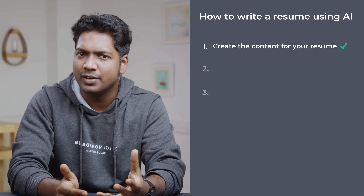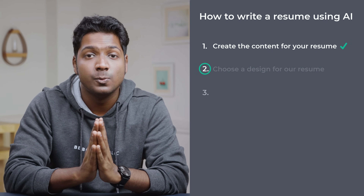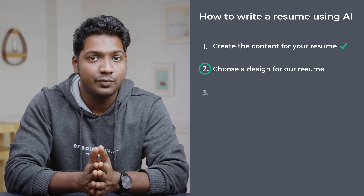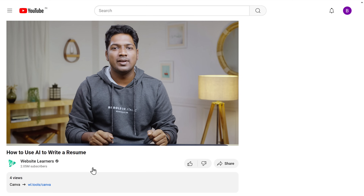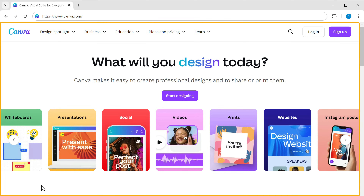Now that we've successfully created the content for our resume, let's go to the next step, which is to choose a design for our resume. To make our resume look great, we're going to use a ready-made resume design and then edit its content according to our needs. To choose a resume design, we're going to use an online tool — just click the link below this video and it'll take you to Canva.